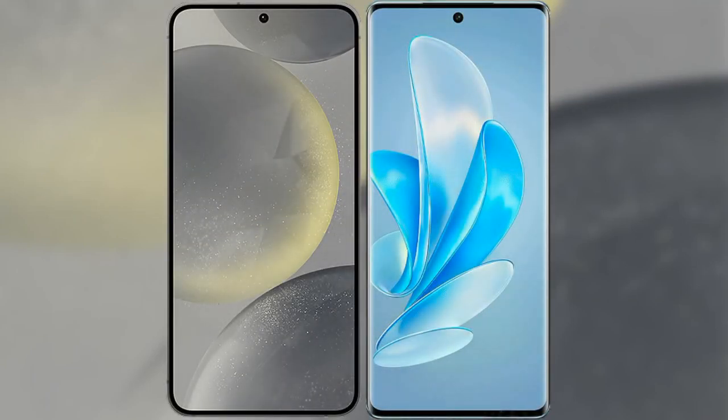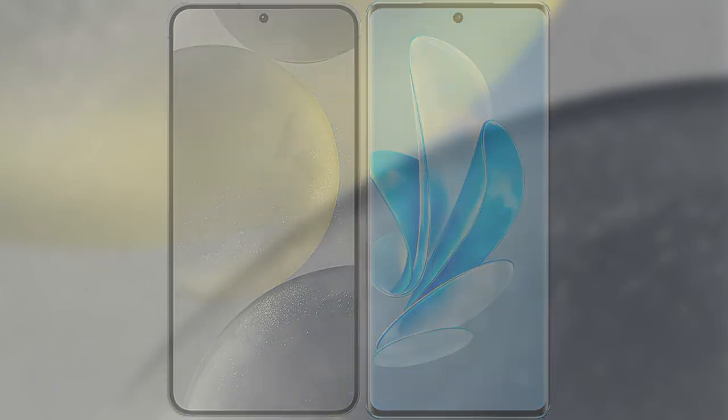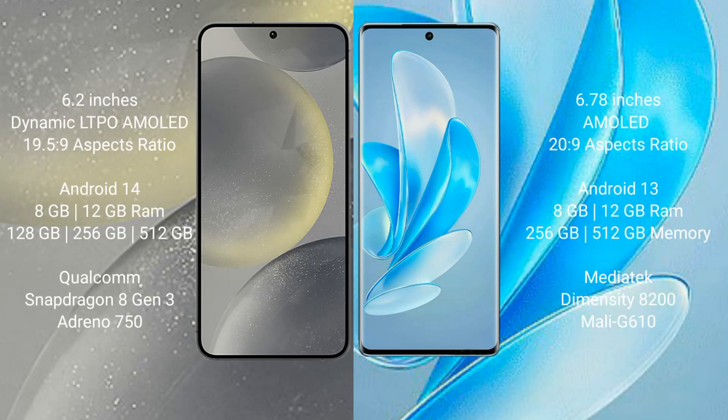I will compare the new Samsung Galaxy S24 with Vivo A17 Pro. Samsung Galaxy S24 comes with a 6.2-inch Dynamic LTPO AMOLED display. Vivo A17 Pro comes with a 6.78-inch AMOLED display.